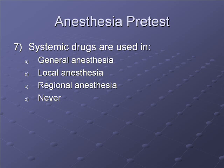Question 7: Systemic drugs are used in — A. General anesthesia, B. Local anesthesia, C. Regional anesthesia, or D. Never. The correct answer is A, general anesthesia. With general anesthesia, drugs are inhaled or injected and get into the body systemically, entering the brain, heart, and other organs. In local anesthesia, the drug is injected in a specific area. In regional anesthesia, it is a halfway point — injected in a specific area but the effects spread to other areas, while the drug itself stays localized.